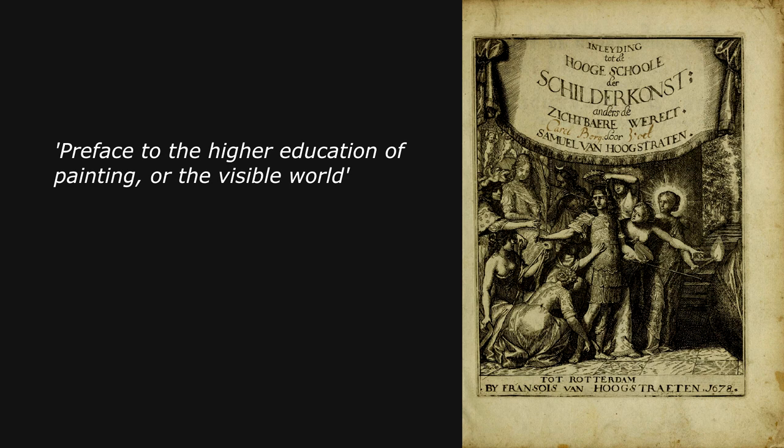The book by Samuel van Hoogstraten was called, when translated to English, 'Preface to the Higher Education of Painting, or The Visible World' — it is really about depiction of what is visible. When Roger de Piles gives his definition of the art of painting, he goes on to discuss other subjects that come into play when you paint: like composition, the disposition of objects in the pictorial space; light and dark, the clair-obscur; coloring; and the expression of emotions.